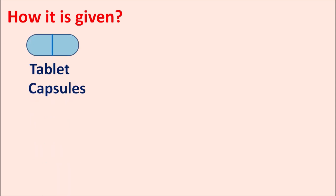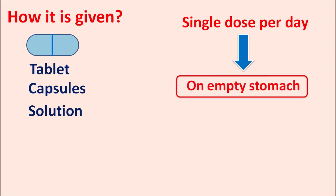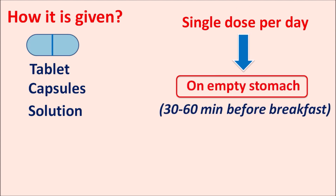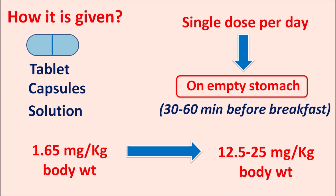Levothyroxine is available as tablets, capsules, and solution. It is given as a single dose per day and should be administered on an empty stomach, with a 30 to 60 minute gap maintained before breakfast for better efficacy. The dose is individualized based on the patient's gender and comorbid conditions, generally initiated at 1.65 mcg per kg body weight and slowly increased to 12.5 to 25 mcg per kg body weight based on symptom control.